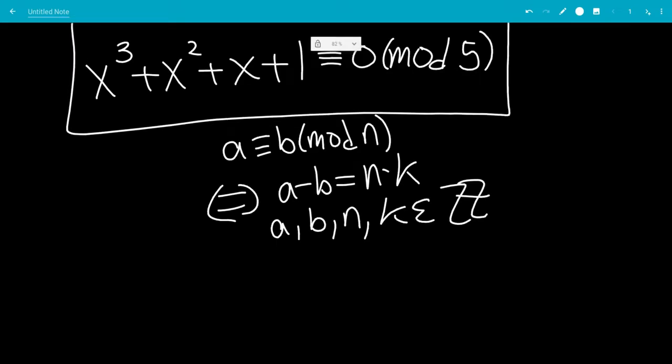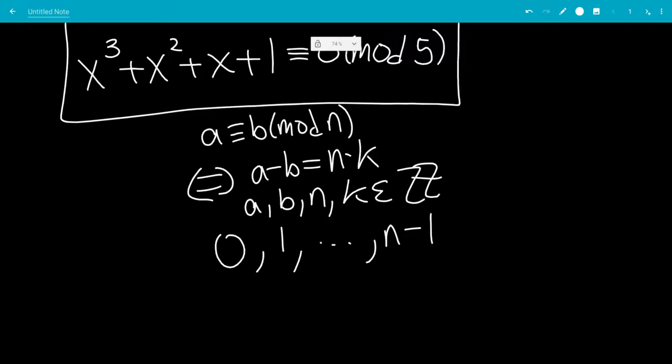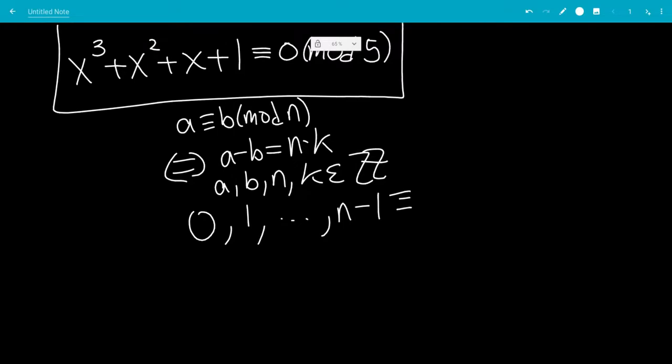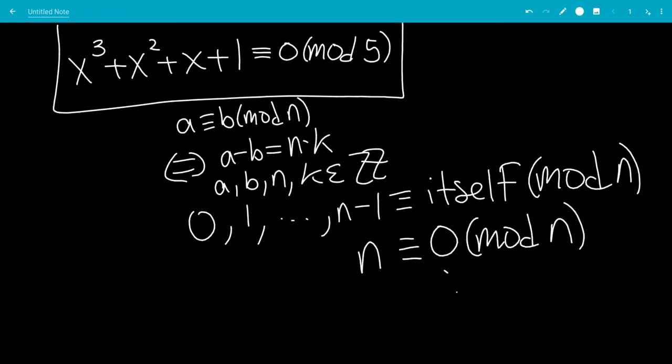Okay, so 0, 1, all the way up to n minus 1 is still congruent to itself mod n. And then n is congruent to 0 mod n, and then you have etc.